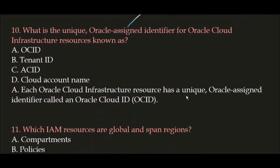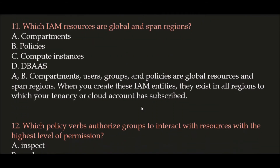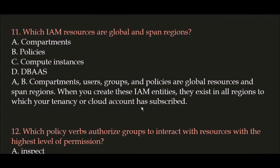Question 10: What is the unique Oracle-assigned identifier for Oracle Cloud Infrastructure resources known as? The correct answer is Option A: OCID. OCID stands for Oracle Cloud ID. Each Oracle Cloud Infrastructure resource has a unique Oracle-assigned identifier called an Oracle Cloud ID, abbreviated as OCID.